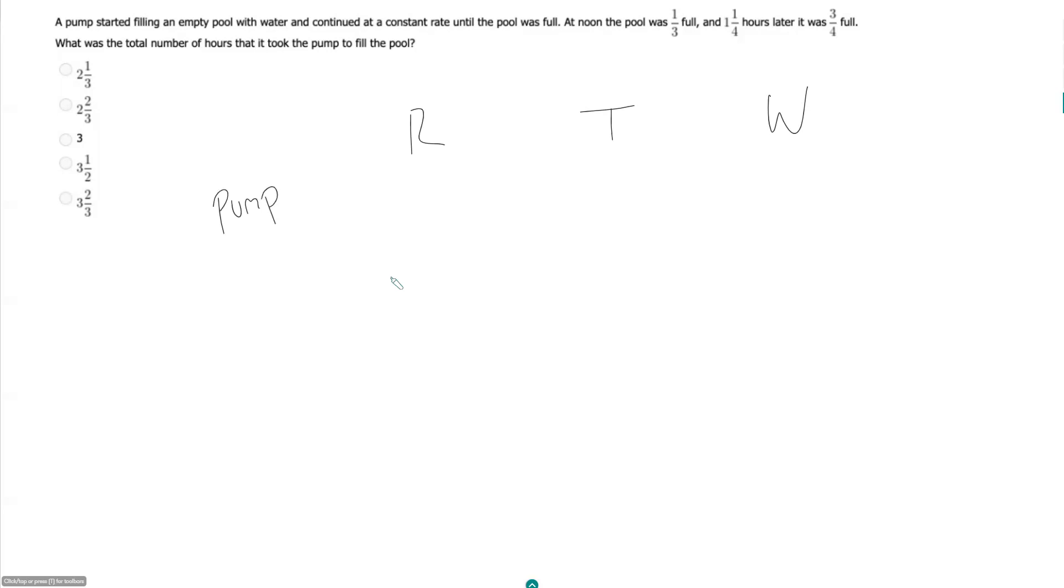If you've watched me do more than one rate question, you might notice I'm always looking for the rate. That is my preferred. If I had a choice between rate, time, or work, I always want the rate, and the reason is because rates are static. The rate does not change unless they tell you that the rate changes.